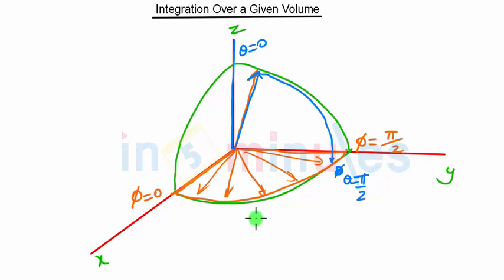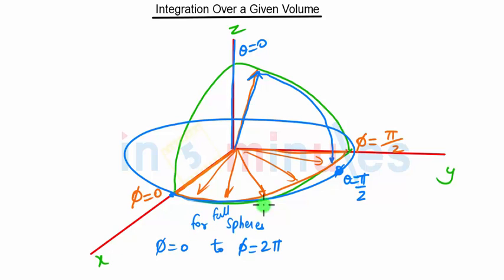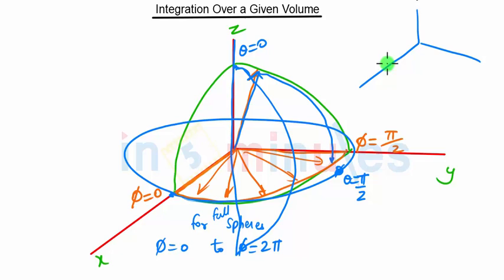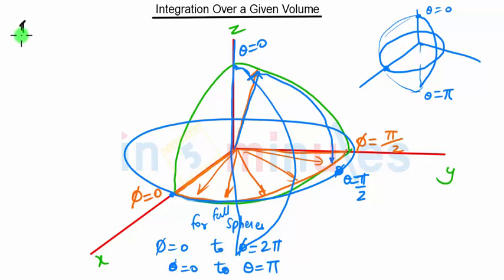To cover the full sphere, φ will go from 0 to 2π for the entire sphere. Then θ will go from the top down so that the entire sphere is covered. φ going from 0 to 2π gives us the circle in the XY plane, then θ starting from the Z axis goes all the way down, so θ will go from 0 to π to cover the full sphere.